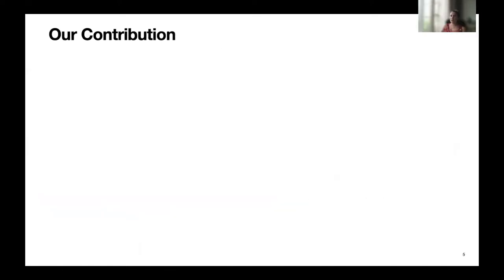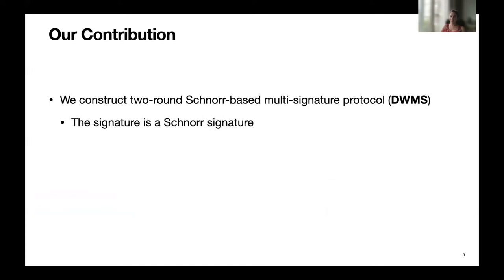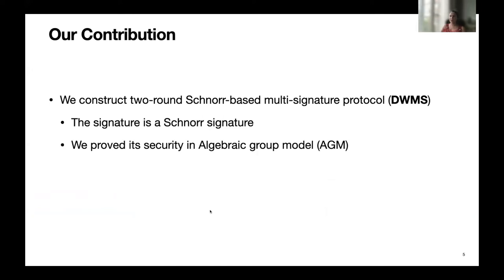In a nutshell, our contribution in this paper is as follows. We construct a two-round Schnorr-based multi-signature protocol that we call DWMS. The final signature in our protocol is the Schnorr signature, and we prove that our protocol is secure in the algebraic group model.